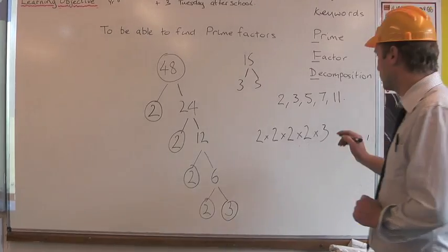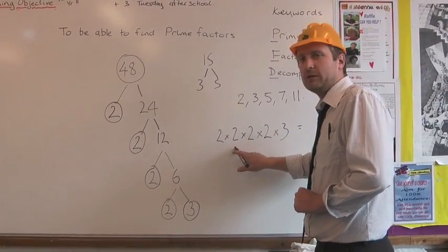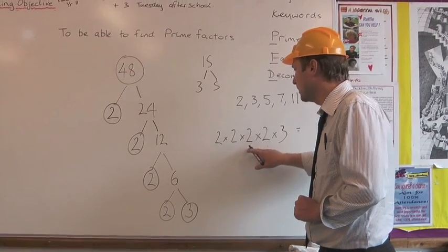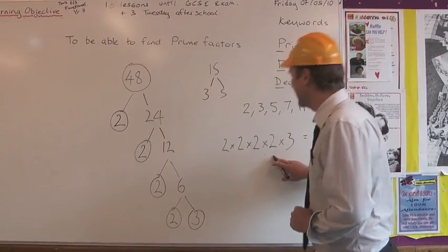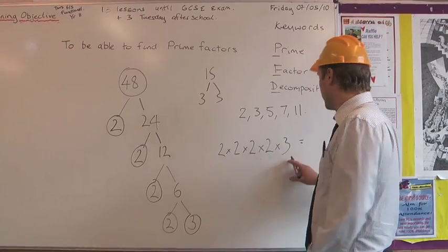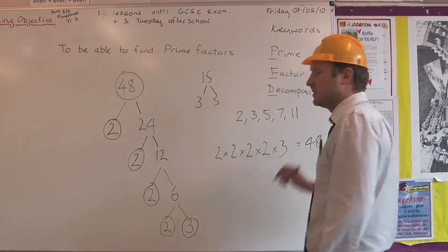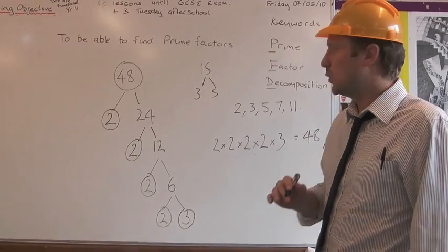Let's check that it works. Two times two is four. Times two is eight. Times two is sixteen. Times three. Must be 48. 48. It is. Check out your calculator if you want. 48.